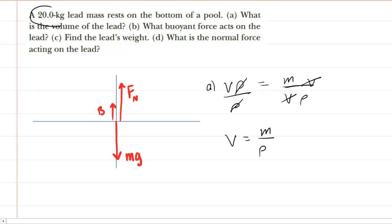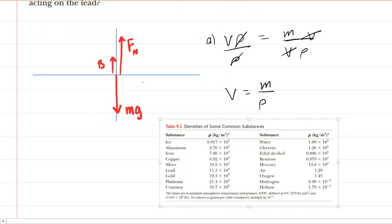We were given the mass directly in the question. It was 20 kilograms. The density of lead is a value that you would have to look up in a table of density values, and we have that table right here so we can see that lead has a density of 11.3 times 10 to the power of 3. So we're going to take the mass, which was the 20 kilograms, and then divide that by the density that we just noted, and that unit for density is kilograms per meter cubed.